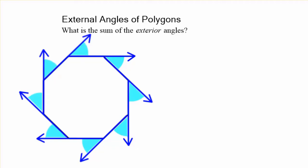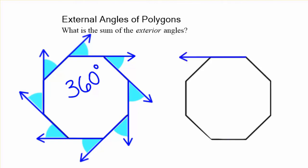And if you think about an ant just walking around that polygon, you'll notice that it went in a circle. It's 360 degrees. The sum of the external angles is always going to be 360 degrees.